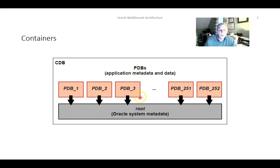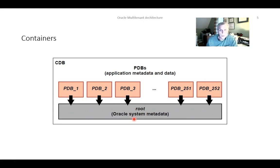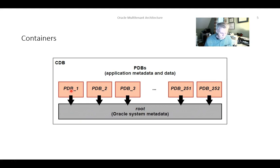The metadata that describes those application tables would be relevant to that pluggable database, but not to other pluggable databases, nor would it have been supplied by Oracle. So we have two types of metadata to consider. In the root database, that's where we have the Oracle-supplied general metadata — for example, Oracle-supplied PL/SQL packages. Every PDB would have access to these, but their definitions would be defined within the root. The academic tables might reside in PDB1, so the metadata pertaining to them would be in PDB1 and only in PDB1, and the data for those tables would also be in PDB1. It's a very interesting architecture and quite an interesting approach that Oracle has taken.